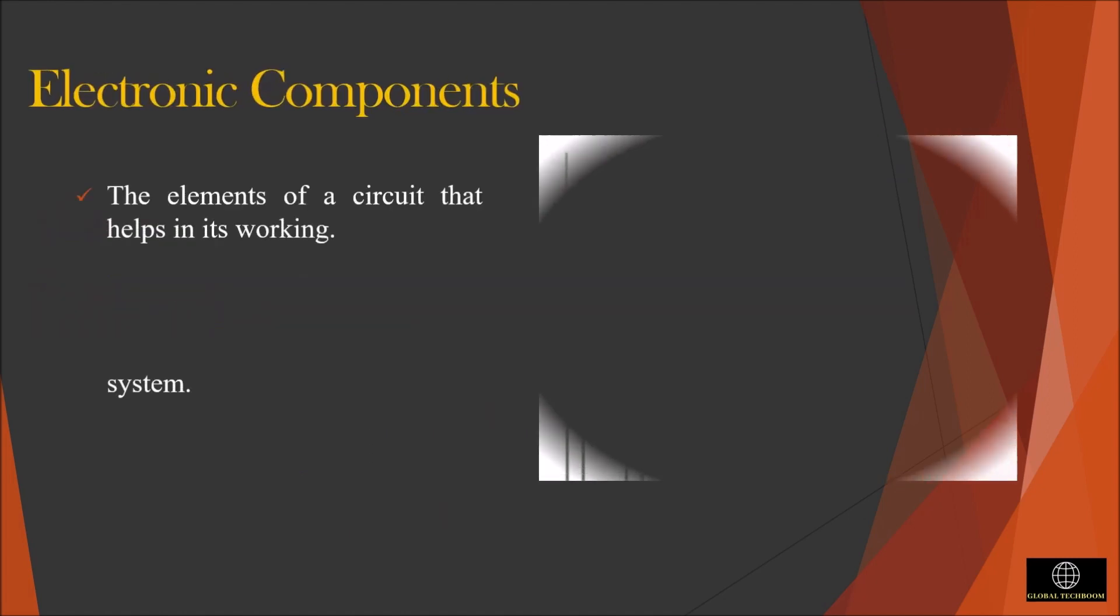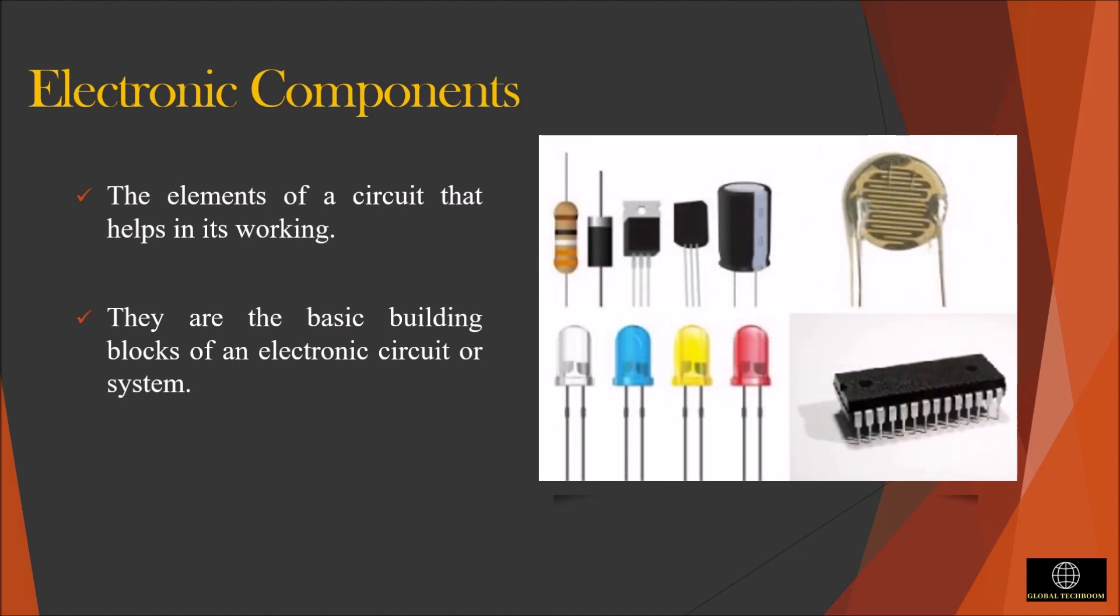Electronic components are the elements of a circuit that helps in its working. They are the basic component of the circuit which controls the flow of electrons in an electronic system. They are very small and so it is very easy to carry it from one place to another. The cost is also very low. Each electronic component in a circuit performs a specific task. So when we connect a group of electronic components in an electronic board, a useful electronic circuit is formed.